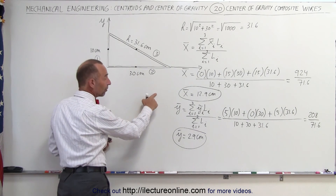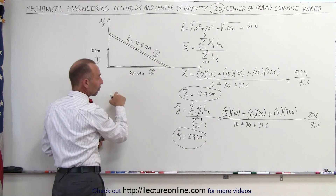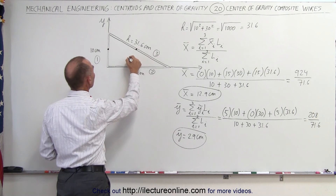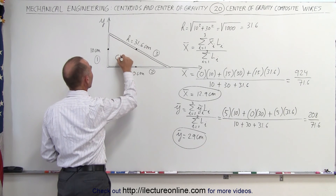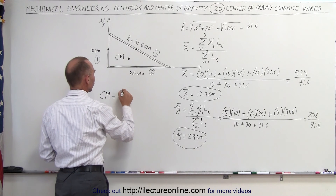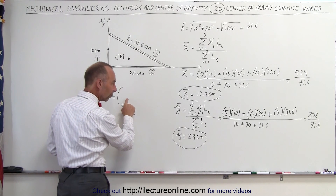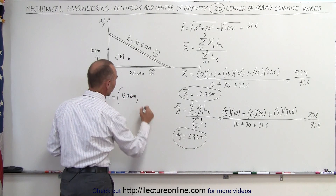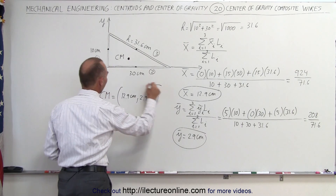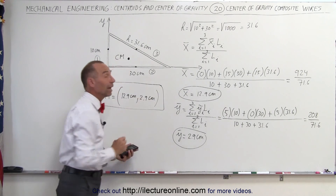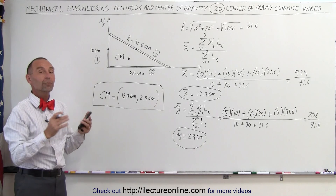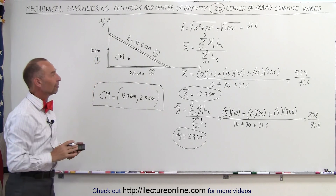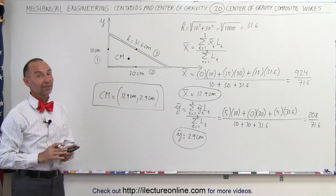So the coordinates of the center of mass of these three wires together are: x equals 12.9 centimeters and y equals 2.9 centimeters — right about there on the diagram. That's how we find the center of mass of a wire system made of individual pieces welded or fixed together, treating them as one piece.